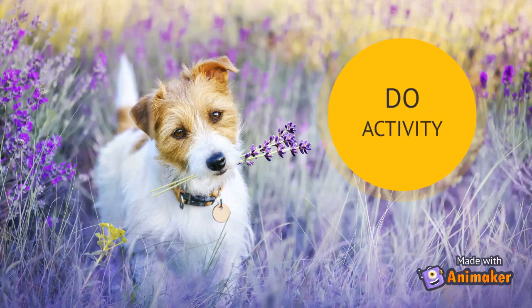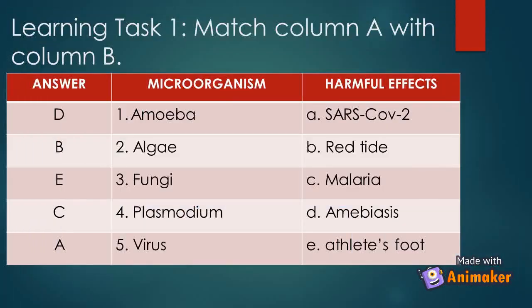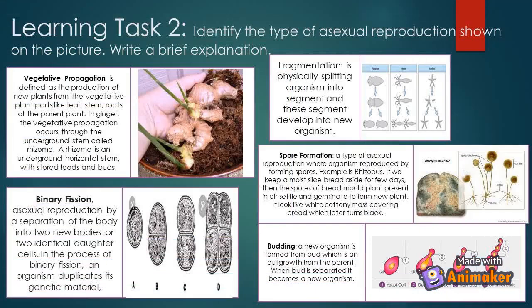Let's do the activity. Let's do learning task number one: match column A to column B. Learning task number two: identify the type of asexual reproduction shown in the picture and write a brief explanation.